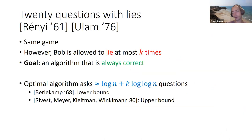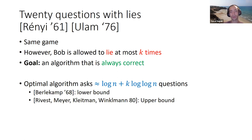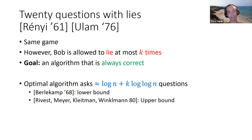Now let's add a complication to this game. We now allow Bob to lie at most k times, but we still want Alice to always detect the correct object regardless of the lies. In this setting, the optimal strategy asks log n plus k log log n questions. This means that every lie adds an additional log log n questions. This was shown tight, even with sharp constants up to lower order terms, in the 80s.